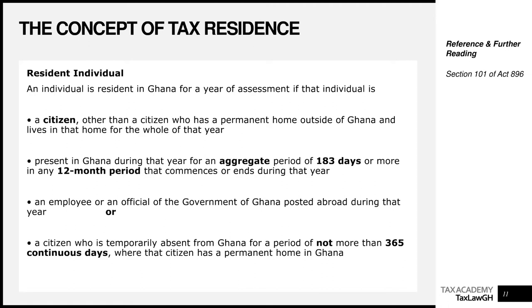The final rule for citizens: a citizen who is temporarily absent from Ghana for a period that is not more than 365 continuous days — note: continuous, not aggregate — where that citizen has a permanent home in Ghana, is still tax resident. What we are saying is any citizen who leaves Ghana on a temporary basis and doesn't spend more than one full continuous year outside Ghana is still tax resident.